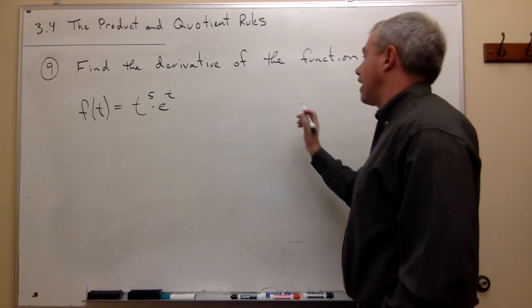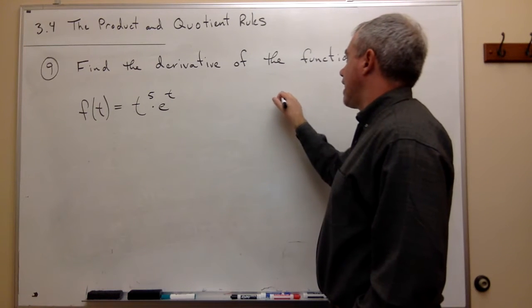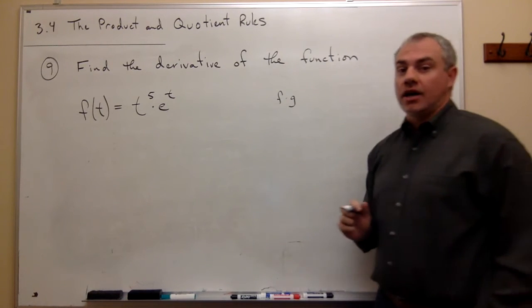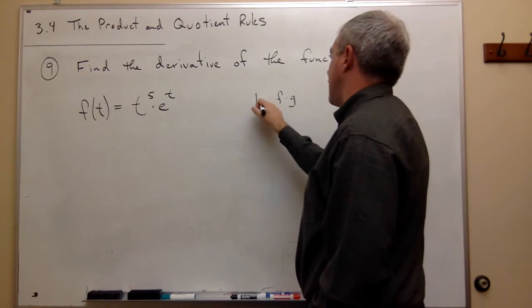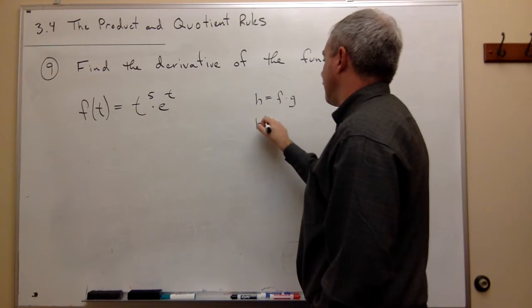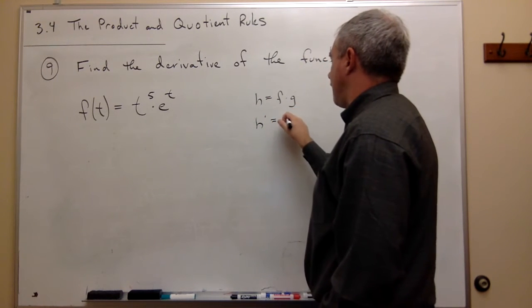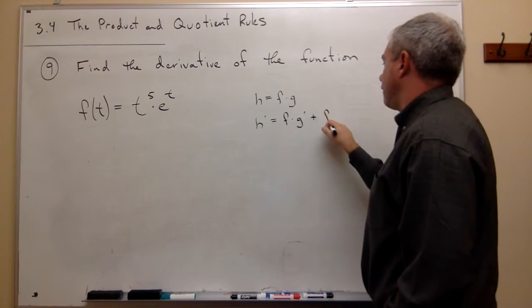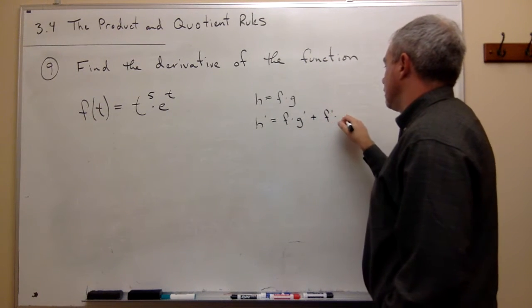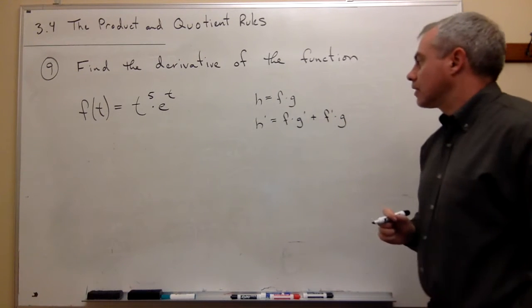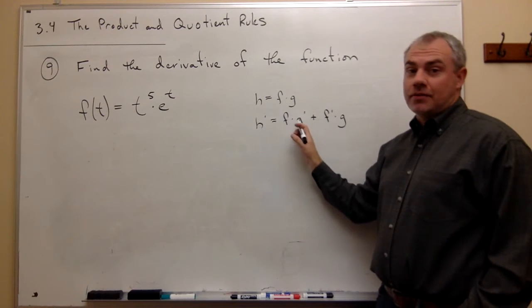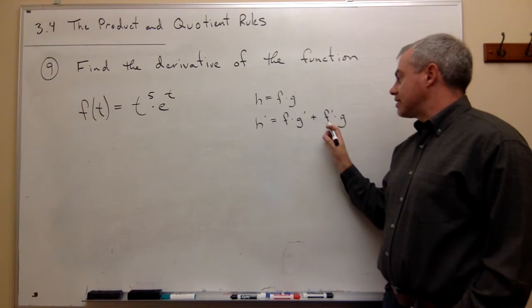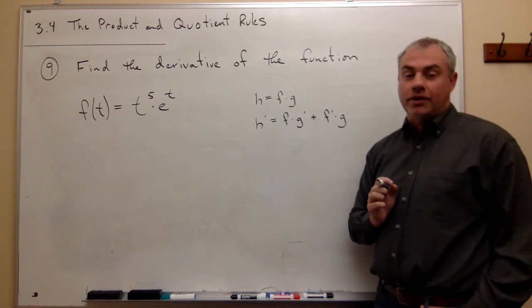The product rule says that if I have something like f times g is my function, and let's say that equals h, then the derivative of h is equal to f times g prime plus f prime times g. So we take the derivative of the second one, leaving the first alone, then we add on taking the derivative of the first one, leaving the second one alone.